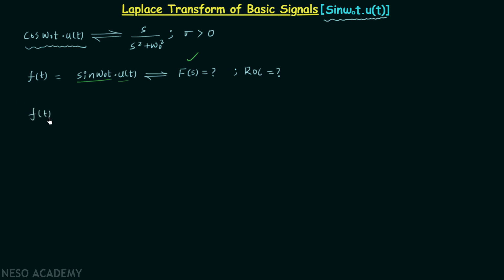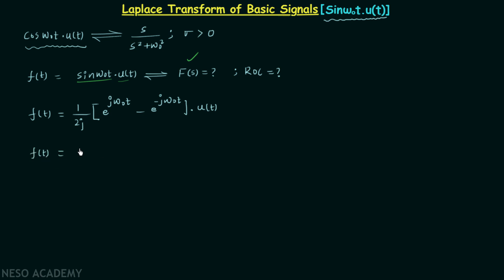Writing sin(ω₀t) in terms of complex exponentials, we can write sin(ω₀t) as 1 over 2j, inside the bracket: e^(jω₀t) minus e^(-jω₀t). Since u(t) is multiplied to sin(ω₀t), we move u(t) inside the bracket, so f(t) equals 1 over 2j times [e^(jω₀t)·u(t) minus e^(-jω₀t)·u(t)].